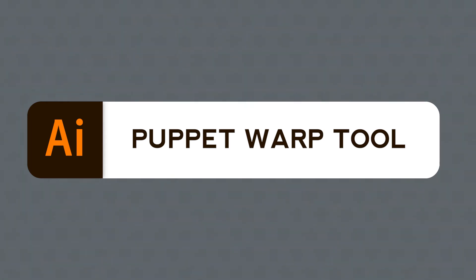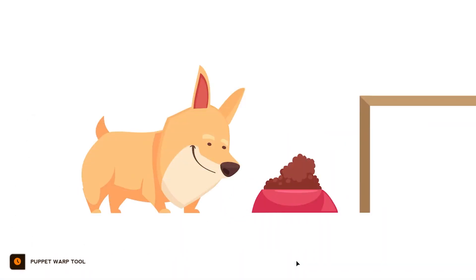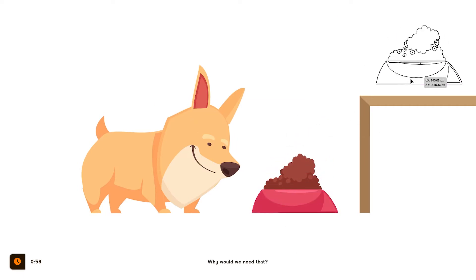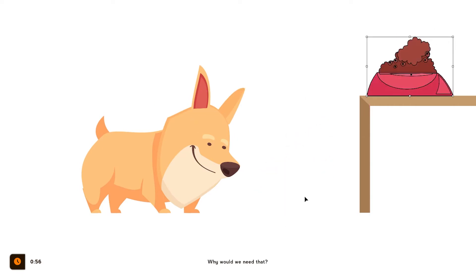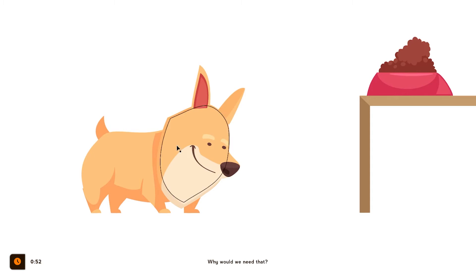Are you ready? We have a cute little dog here, looking at his delicious meal. But what if we move his bowl up to the table? The illustration makes no sense now, and this is where the Puppet Warp Tool comes to play.